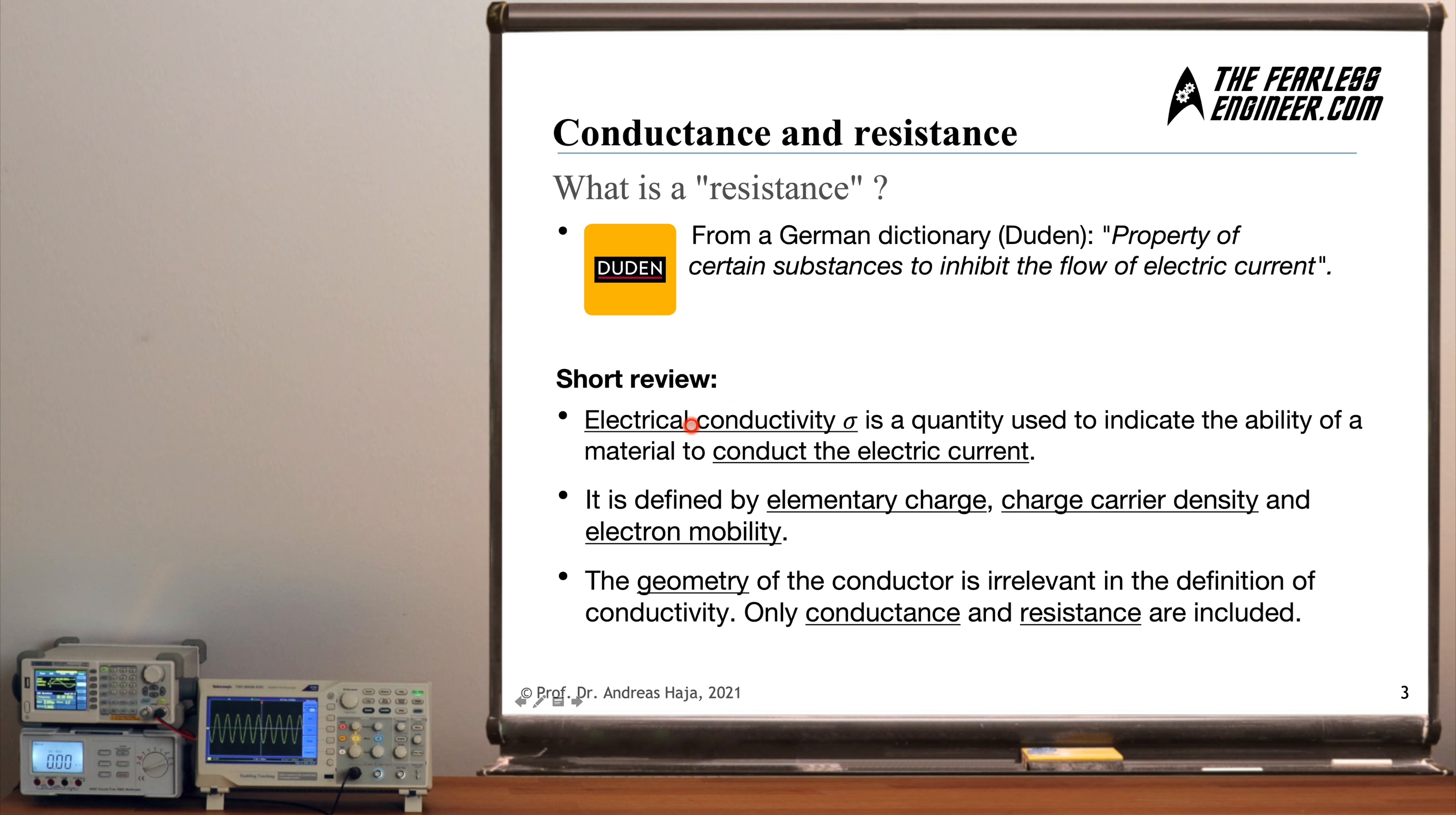The first is the electrical conductivity sigma describes a quantity which is used to indicate the ability of a material to conduct the electric current. In the previous video we have deeply looked into this concept of electrical conductivity and also into the parameters out of which it is assembled. If you haven't seen this video up until now, I recommend that you watch it in order to understand what's coming now. Also, secondly, this conductivity is defined by the elementary charge, the charge carrier density, and the electron mobility. These are the parameters which make up the electrical conductivity.